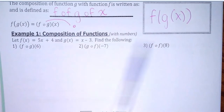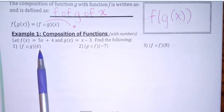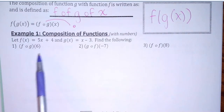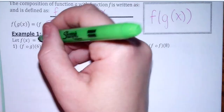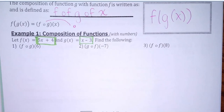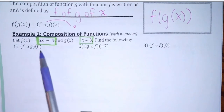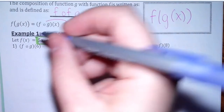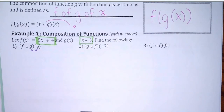For this example, we're just going to use numbers to plug in. Just like when we were doing the operations, if you plug numbers in, your answer is going to be a number. If we have variables, then our answer is going to be an expression. We have f of x is 5x plus 4, and g of x is x minus 3. This would be read f of g of 6. The one closest goes first, so I'm going to plug 6 into the g of x function.